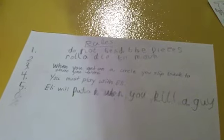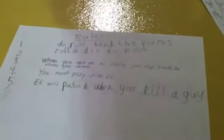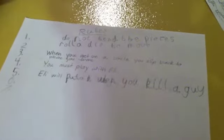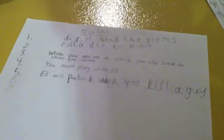Okay, what's the second rule? Roll a die to move. Okay, and then what happens? When you get on a circle, you slip back to where you were. Okay.